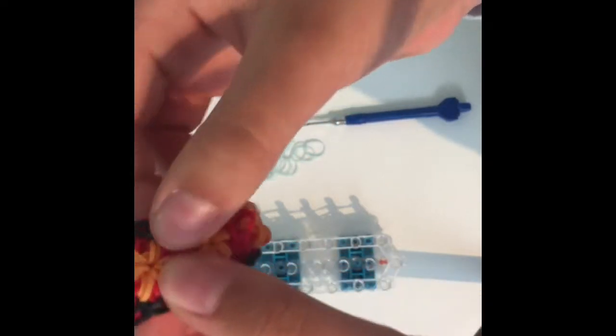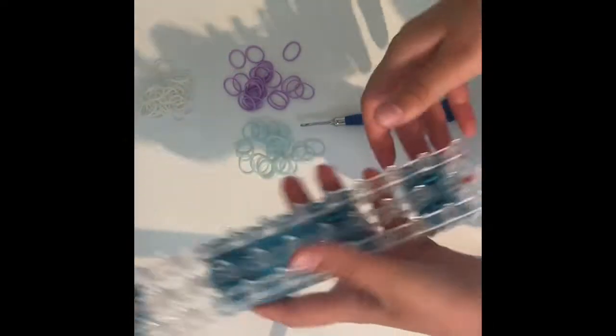Now you're going to take the color you'll be using for your petals, these little circles here, and you're going to be doing this.